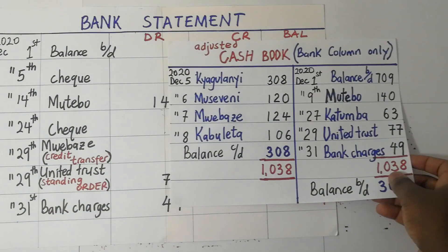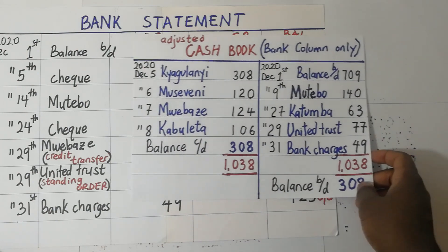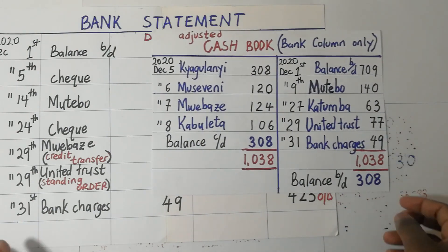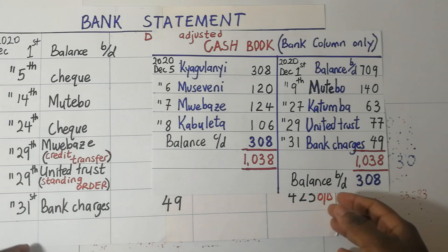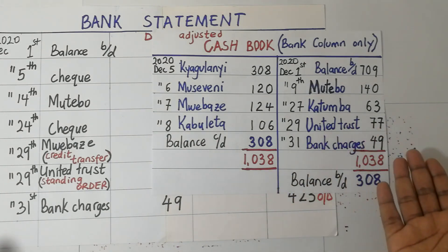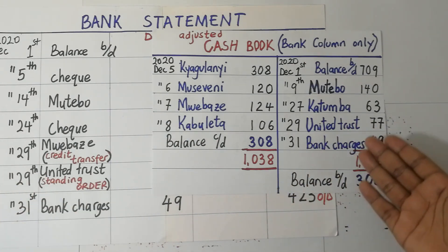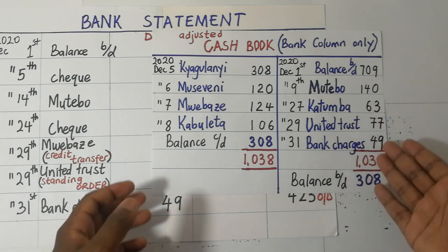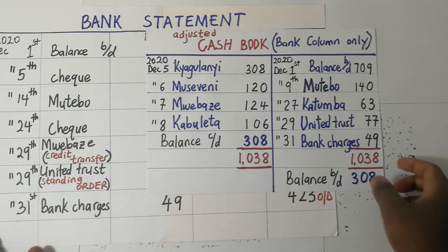This is a practical illustration that I'm going to show you on how to go about this. And at the end of this video, you'll be able to realize that the way we handle the adjusting entries when we are dealing with a cash book that has a debit balance is not any different from the way we do it when we are having a cash book with a bank overdraft. So let's get started.